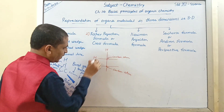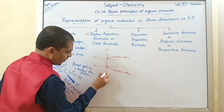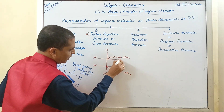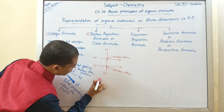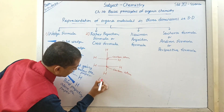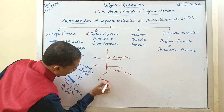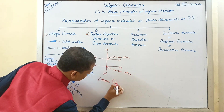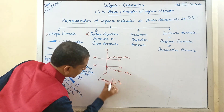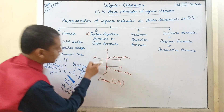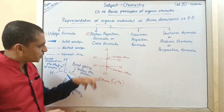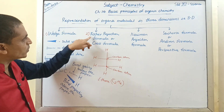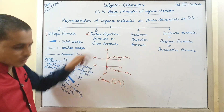The molecular formula of ethane is C2H6. So this is the structure of the ethane molecule by using Fischer projection formula or cross formula.